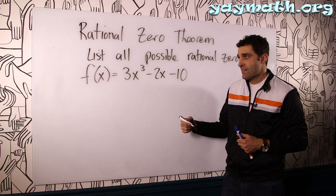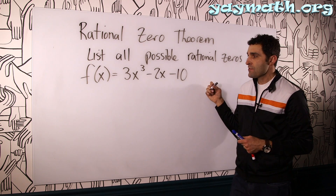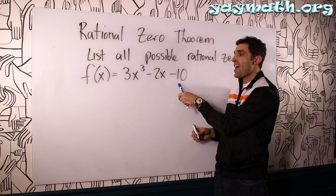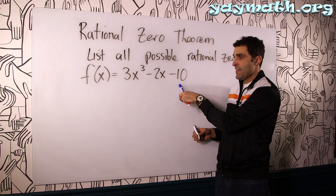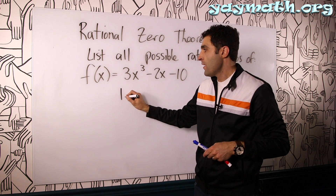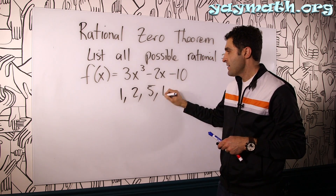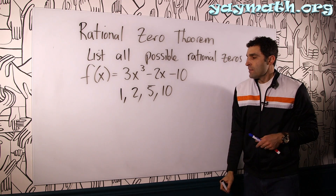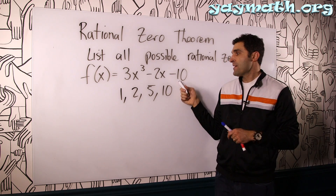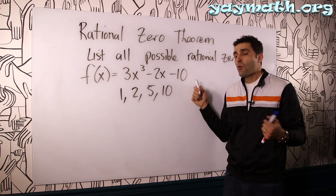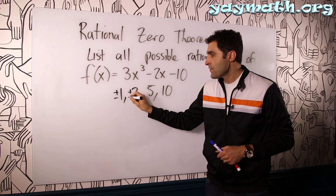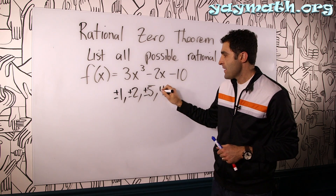The candidate root list goes as follows. First, we need to establish all the factors of the constant, in this case negative ten. So what are all the factors of ten? We put down one, two, five, and ten. So those are the factors of negative ten. In fact, for all these problems, a factor of negative ten or positive ten would be plus or minus one, plus or minus two, plus or minus five, or plus or minus ten.